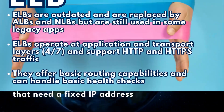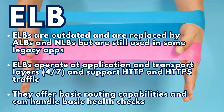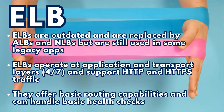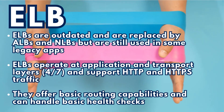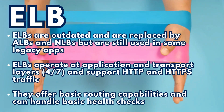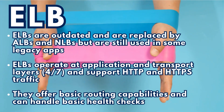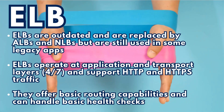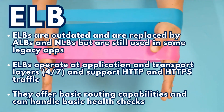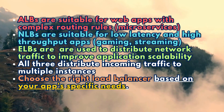The third load balancer is the Classic Load Balancer, or ELB. ELBs are the oldest type of load balancer in AWS and are now deprecated in favor of ALBs and NLBs. However, they are still used in some legacy applications. ELBs operate at both the application and transport layers and support both HTTP and HTTPS traffic. They provide basic routing capabilities and can handle basic health checks.